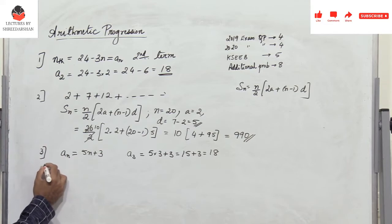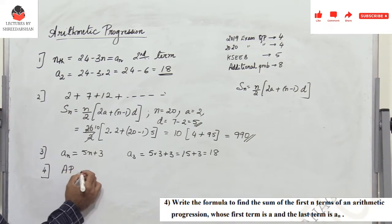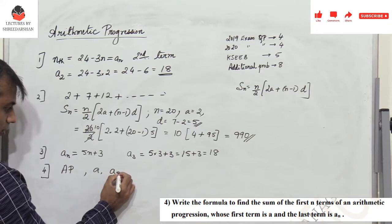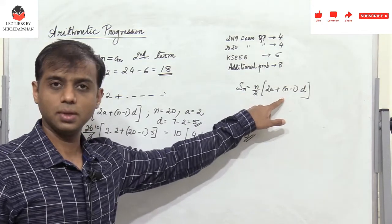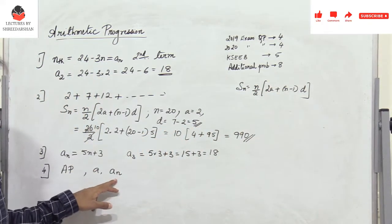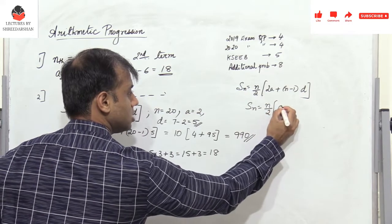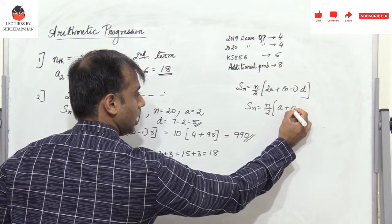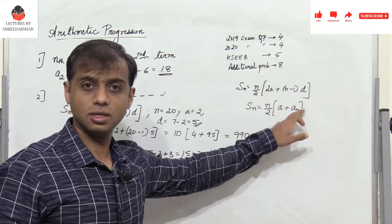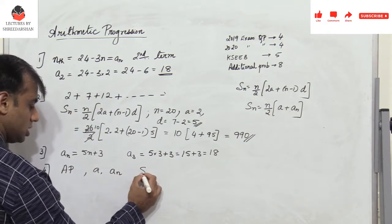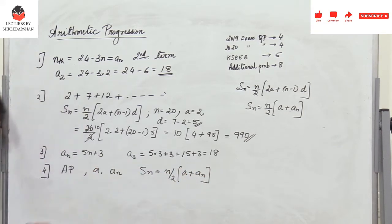Write the formula to find the sum of the first n terms of an arithmetic progression where the first term is a and the last term is aₙ. When the first and last terms are given, the sum is Sₙ = n/2 × (a + aₙ), where aₙ (sometimes called l, the last term) is used. This was a one-mark problem.